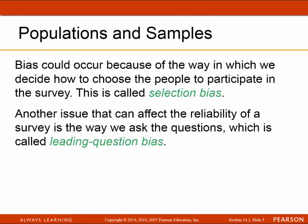Bias can occur in different ways. The way that we choose participants is called selection bias. The type of questions or the way we ask them can also affect how reliable a sample is — this is what we call leading question bias.